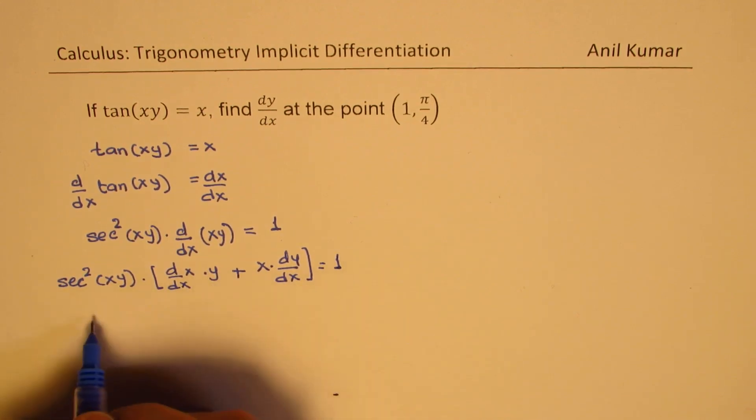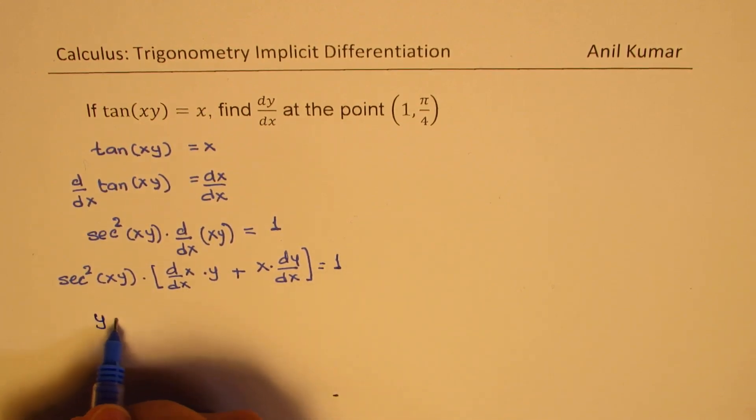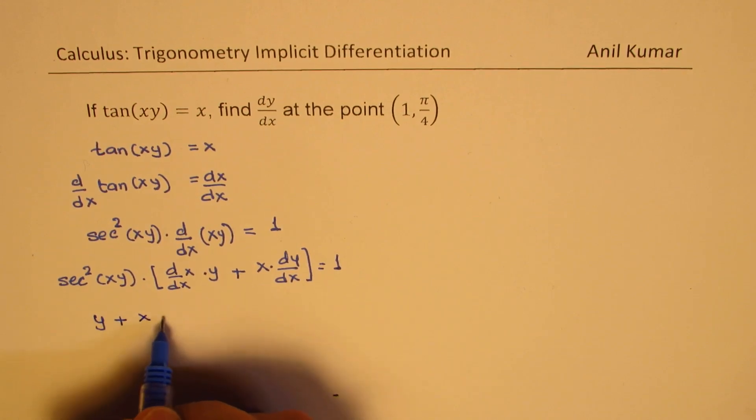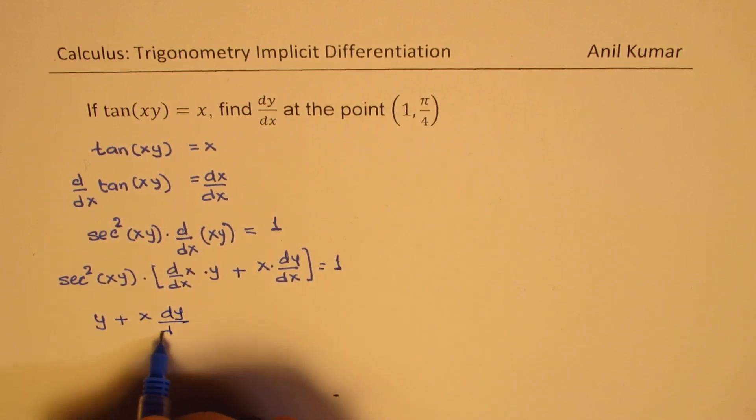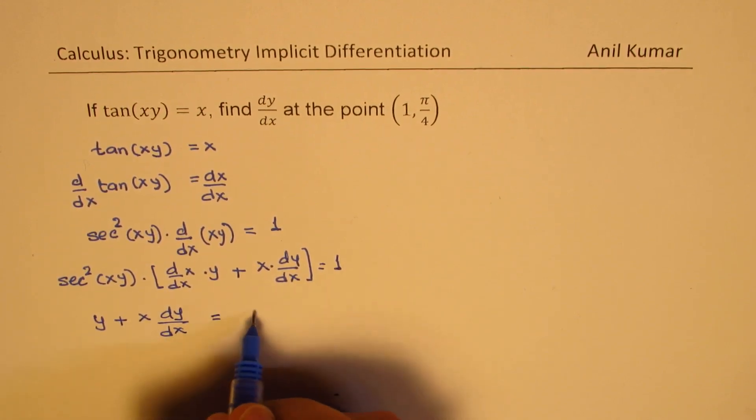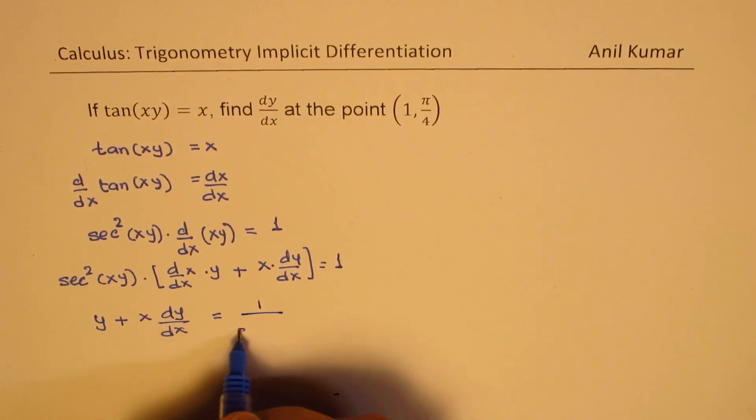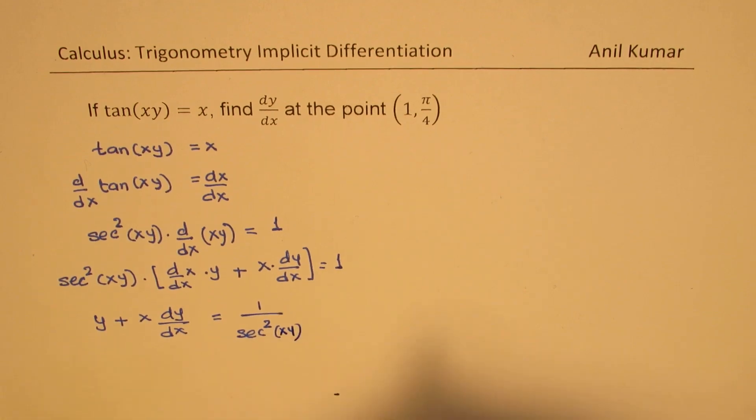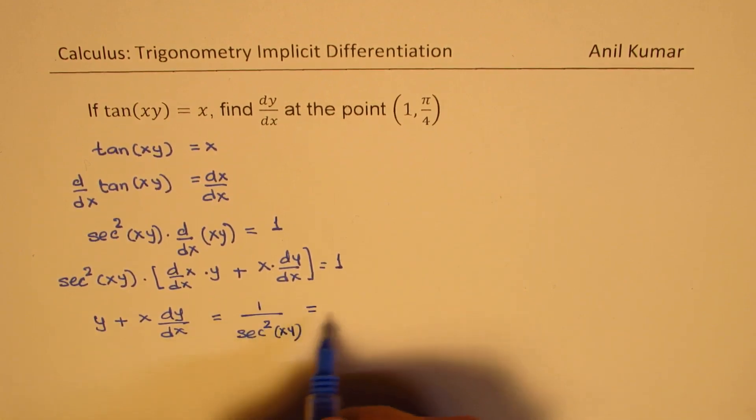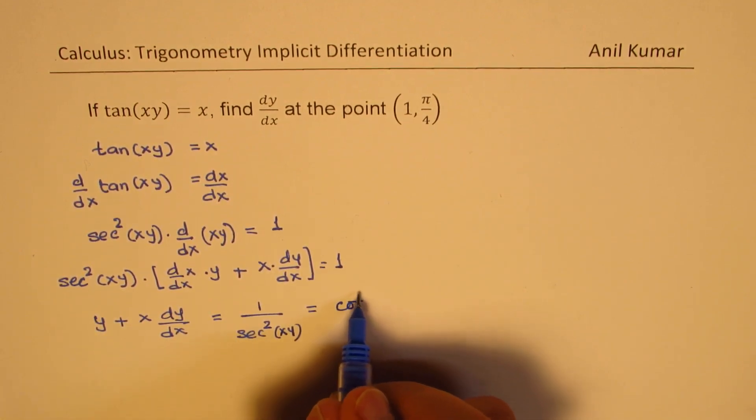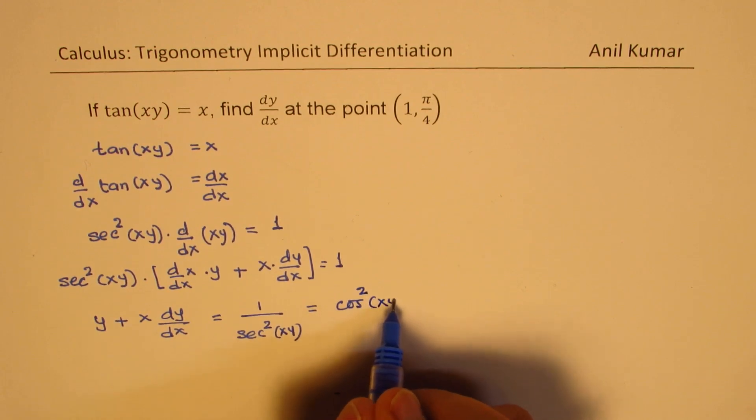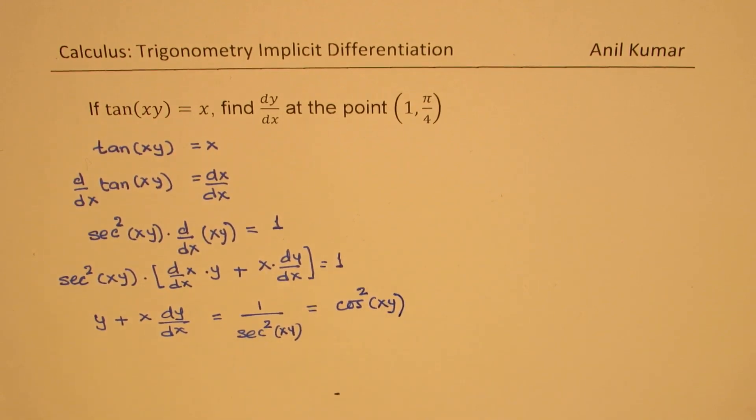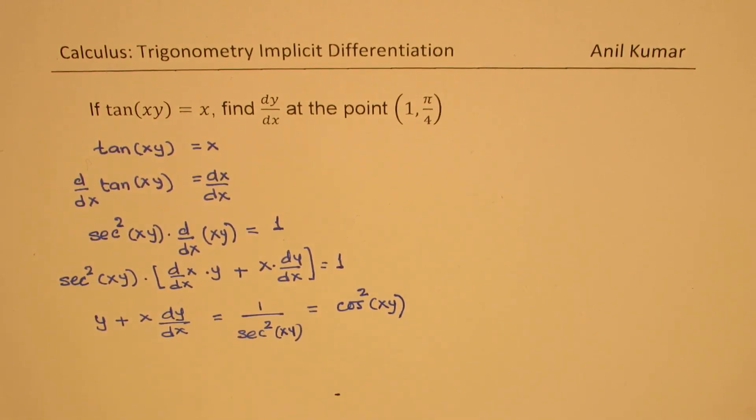Now, that is, we get y plus x dy/dx equal to 1 over sec²(xy). Now, 1 over sec²(xy) is cos²(xy). From here, we can isolate dy/dx.